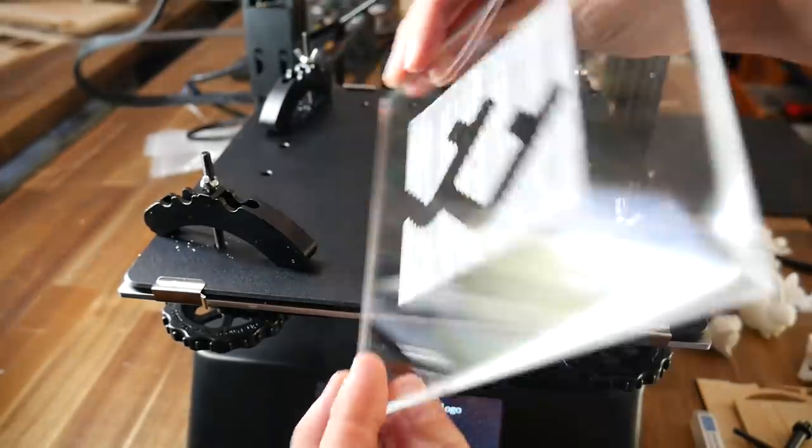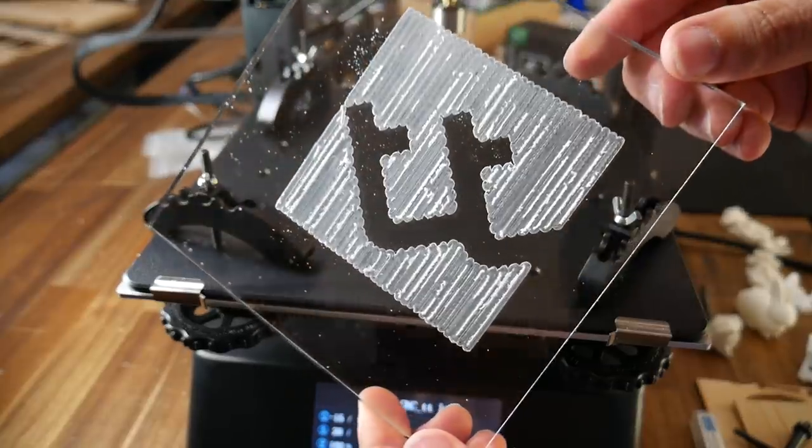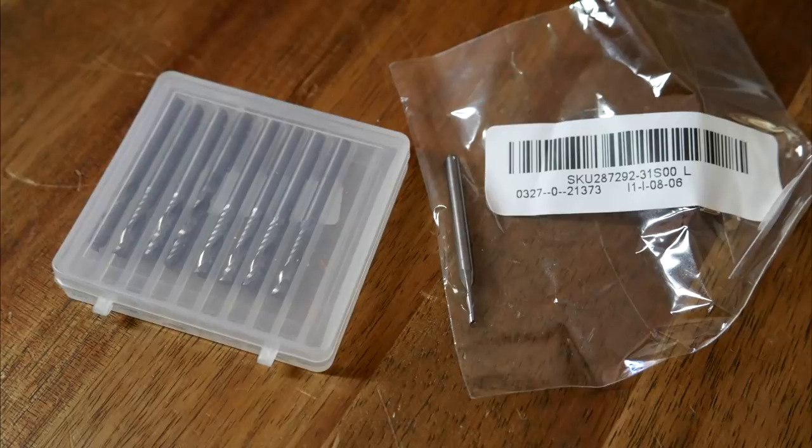The finished result isn't too bad, the overall shape is being created accurately, but you'll notice some of the detail is missing and that's because I snapped the original cutter and had to switch to one of a slightly wider diameter. Small CNC bits are very cheap to get online, so I'd recommend building up a small collection.